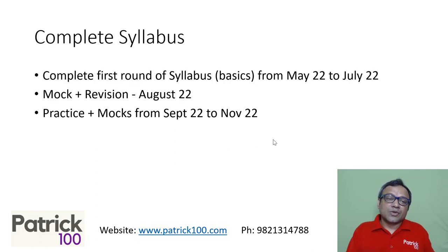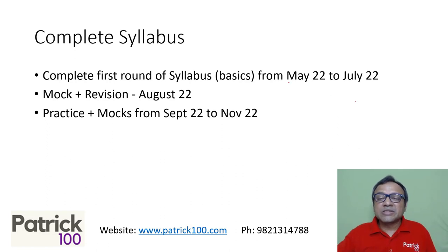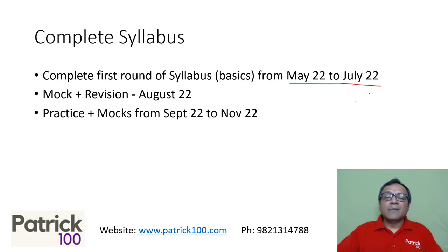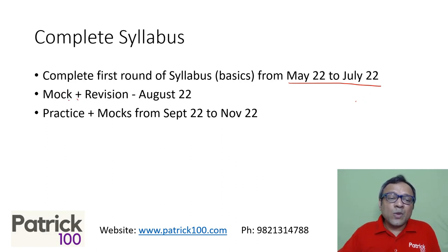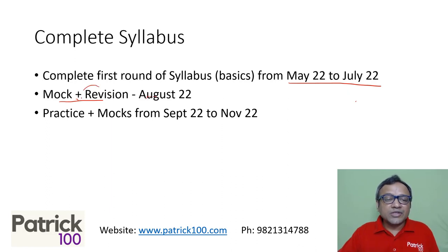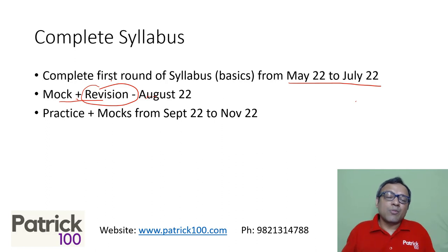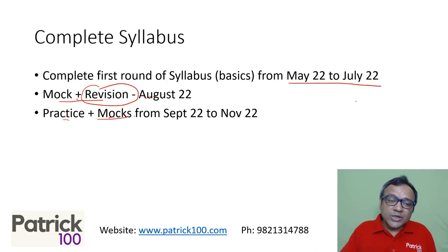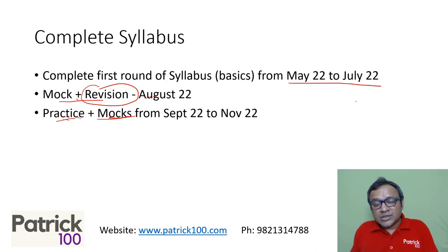Coming to the con section, the whole broad plan is that you try to complete the syllabus by July. You start from May, complete in July — three months time to complete the syllabus. Then one month time where you write a mock, maybe one mock per week plus revision, but focus will be on revision. You write a mock, you're in touch with a mock, you know what you're doing — one mock per week plus revision. And then from September onwards, you'll increase the number of mocks and focus more on practice, trying to get better methods, better scores, strategy, etc.